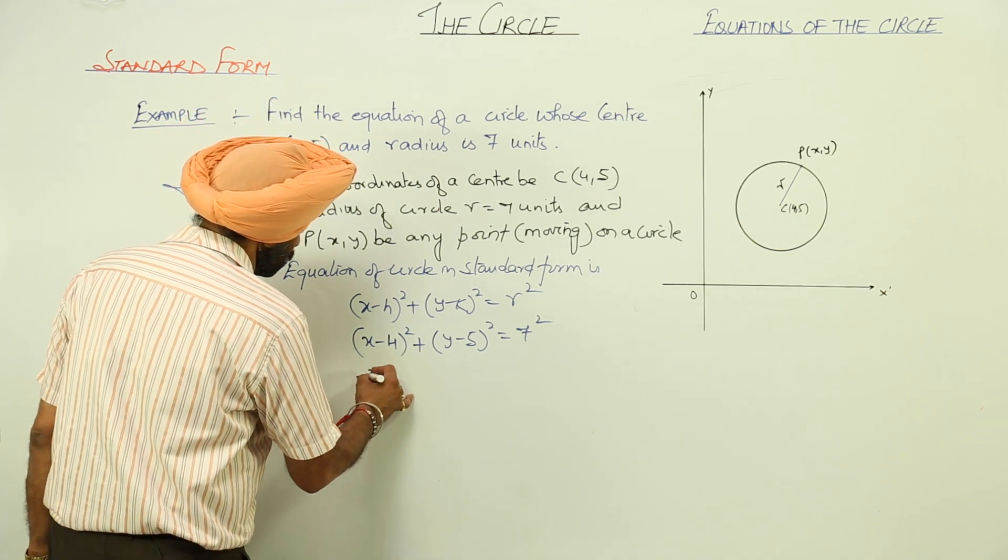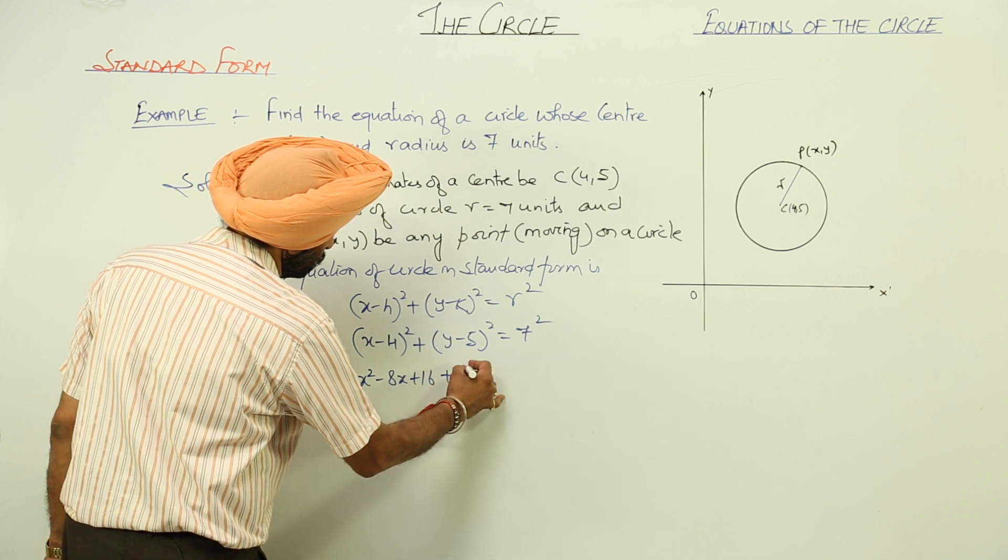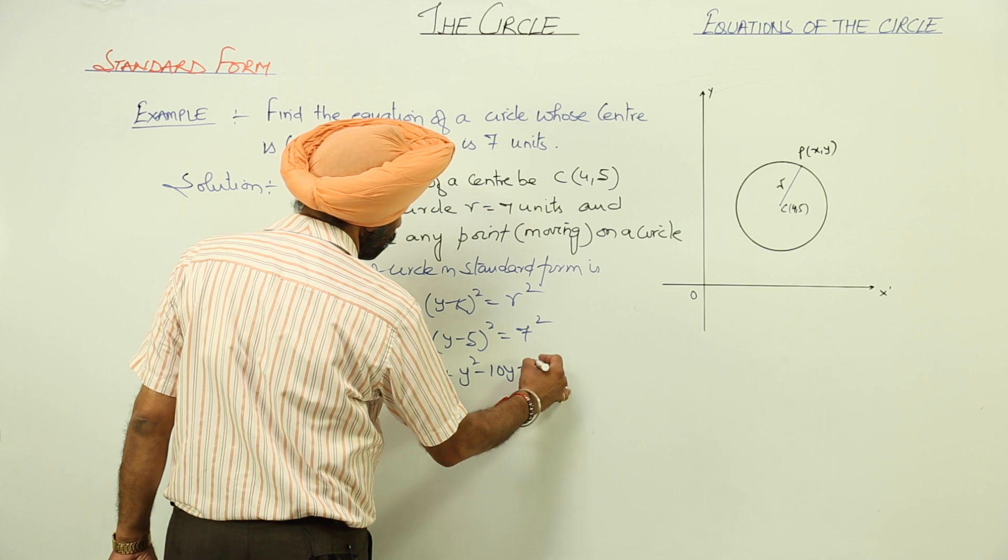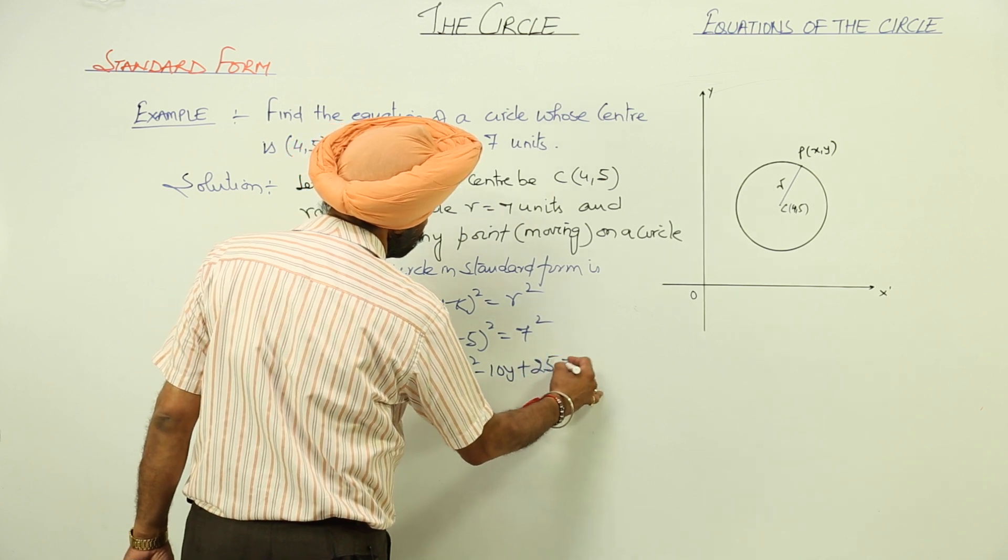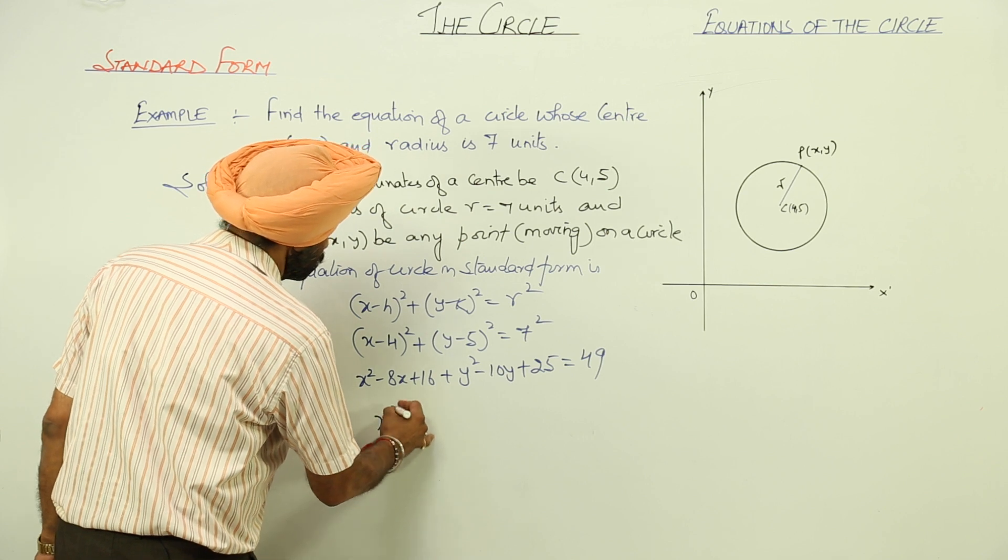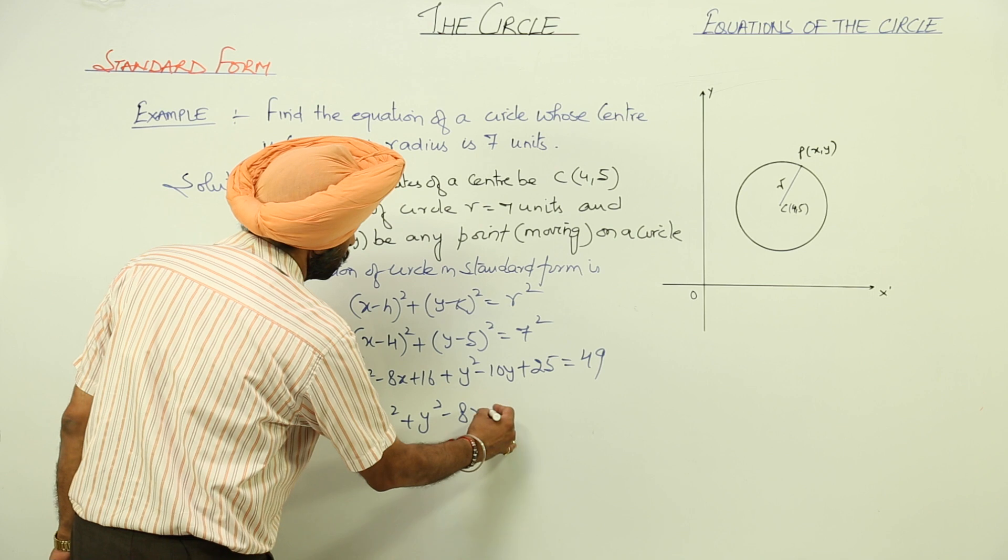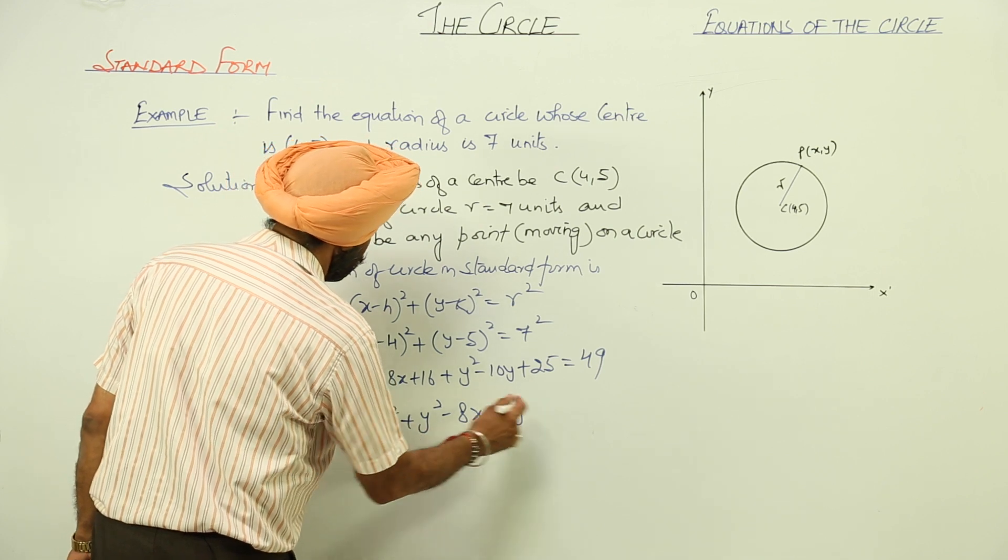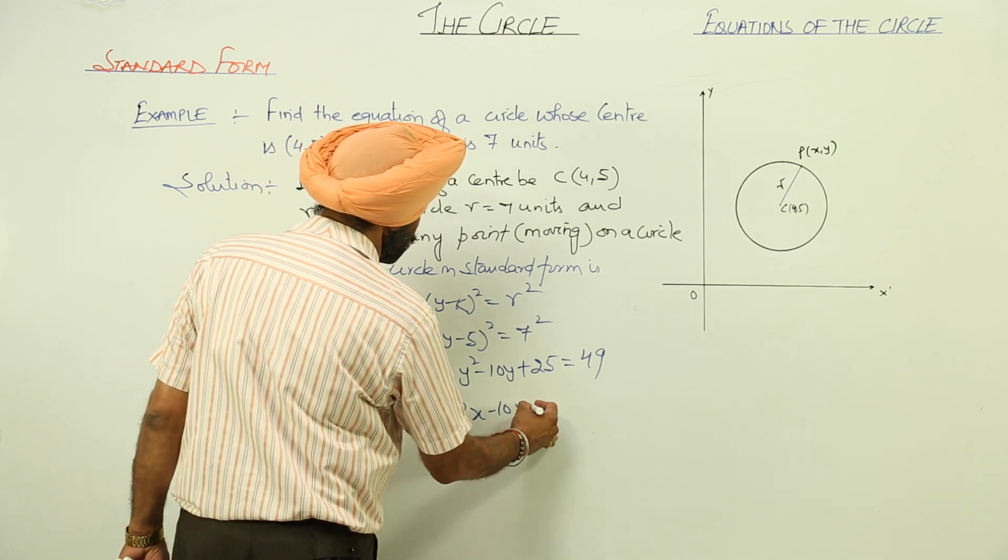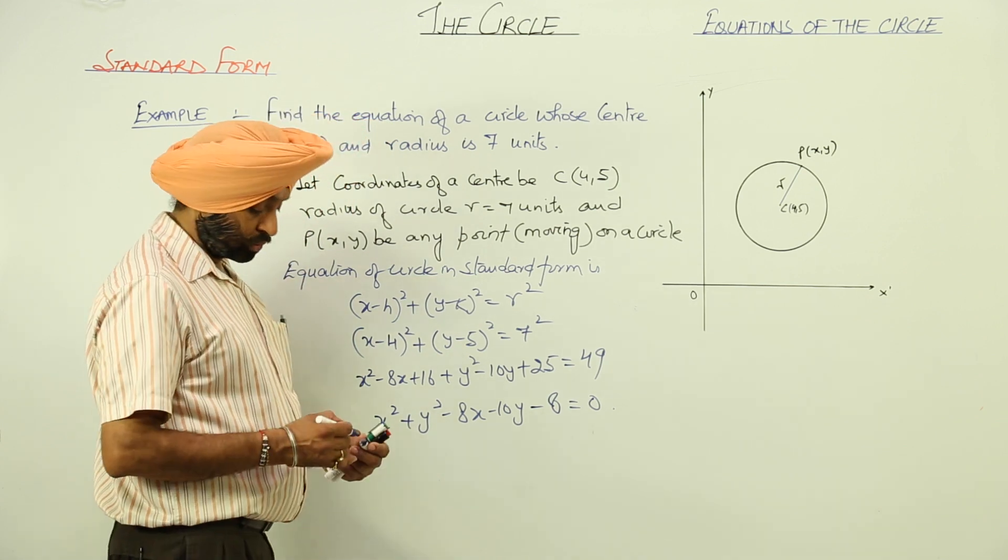This becomes x² - 8x + 16 + y² - 10y + 25 = 49, or x² + y² - 8x - 10y + 16 + 25 - 49 = 0.